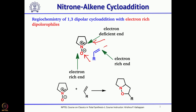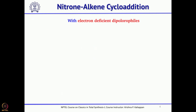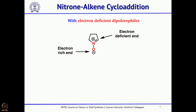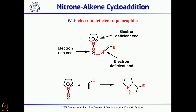One end is electron-rich and the other is electron-deficient. You can see the bond forming between these two carbon atoms. Likewise, when you use an electron-deficient dipolarophile, this is where the bond will form and the regiochemistry will be reversed.